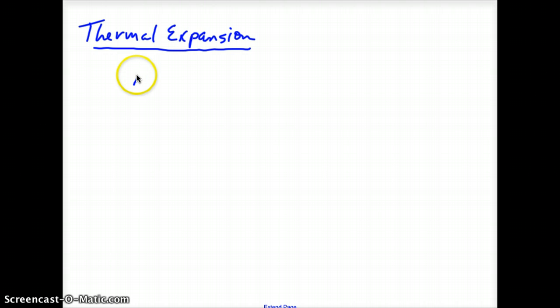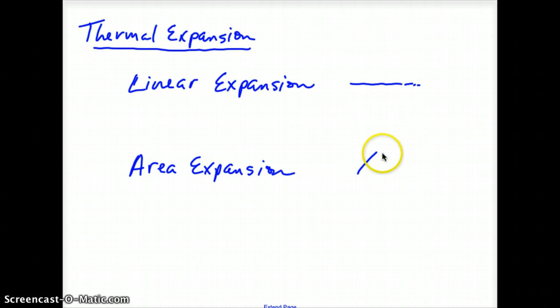The first way is you have linear expansion. This is if you have a certain length of a piece of metal and you heat it, it gets longer because of that expansion. The second way is area expansion. For example, the roof on a house, if you heat that, it's going to expand in multiple directions based on the area. And then the last way is the volume expansion, which liquid will expand in three dimensions.